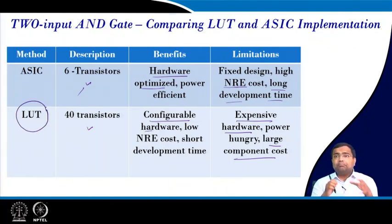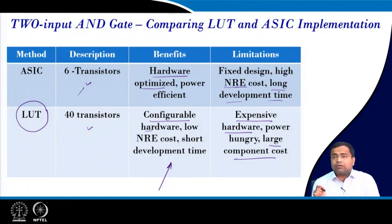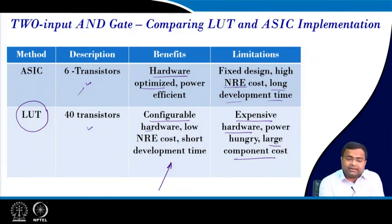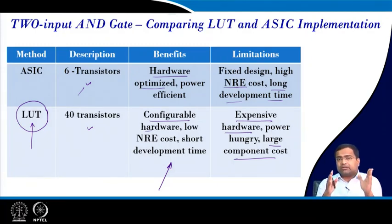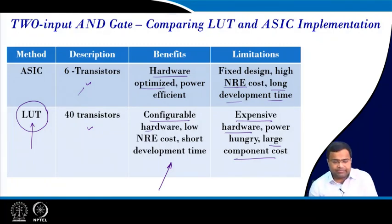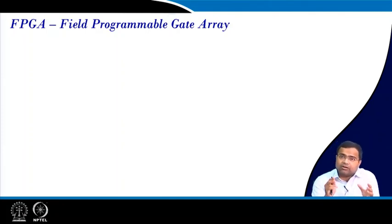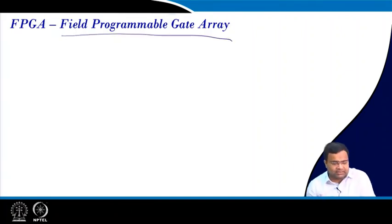So ASIC-based microcontroller architectures are useful for low-power consumption reduction. Whereas lookup tables are very good if you want to prototype various algorithms — it is configurable hardware. NRE cost is low and development time is short, but it is expensive in hardware because silicon area increases and it is power hungry due to too many transistors.